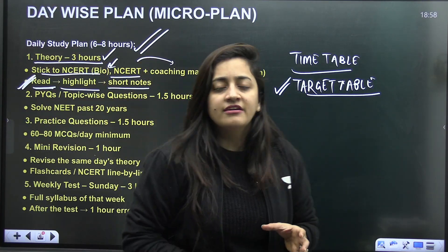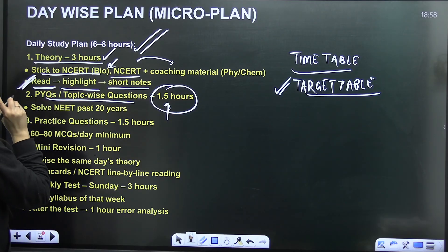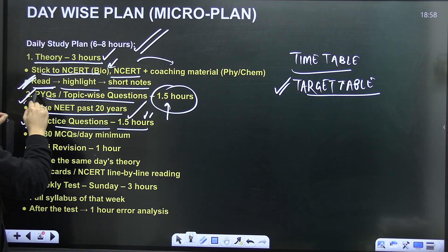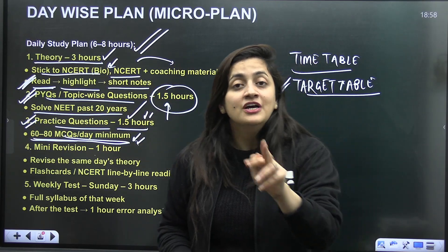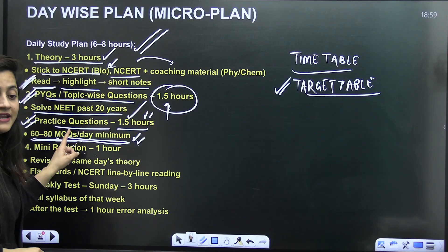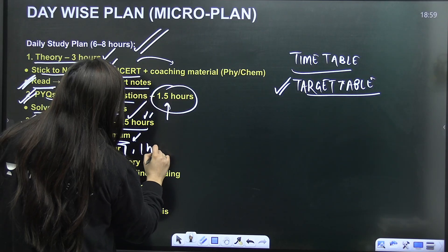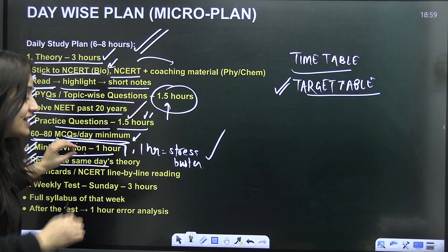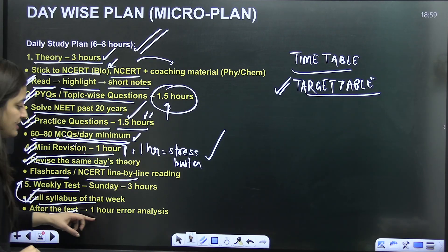So every day, 1.5 hours minimum for the PYQ practice should be there. Number one, solve at least past 20 years MCQs. Practice question for 1.5 hours. Like practice is important. PYQ practice separately is important. So at least 60 to 80 MCQs per day, you should solve, you should practice. Like if you have to complete five chapters a week, you are not just allowed to write the notes only, you are not just allowed to watch the lectures only, you should at least practice 60 to 80 MCQs per day. This is good for reducing the negative marking. This is good for time management as well. So every day in your schedule, one hour for the mini revision should be there and one hour for the stress buster activity should be there. This should be there. So revise the same day. Whatever theory you have completed, you should revise it every day. You can make the flashcards, NCERT line to line reading, weekly test you have to go. So full syllabus of that week, you should go for the test. And after the test, error analysis is important.